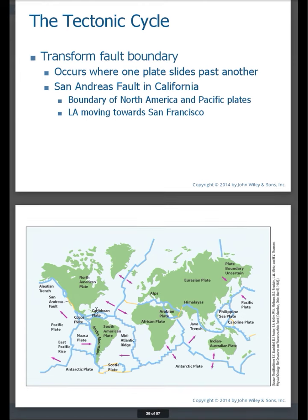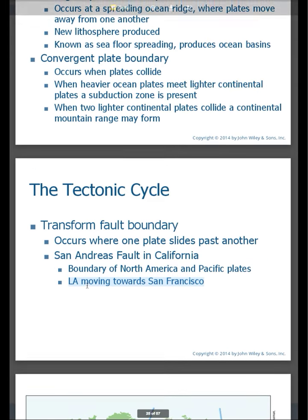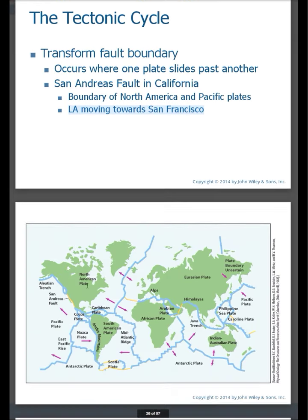Then we have what we call transform fault boundaries — this is when boundaries basically move parallel to each other but in different directions. A really famous transform fault is the San Andreas Fault. The Pacific plate is moving to the northwest and the North American plate is moving to the southeast. Over millions of years, one day Los Angeles will be a suburb of San Francisco as these plates move. So these are all ways of the tectonic cycle helping to produce rocks and minerals.